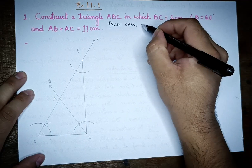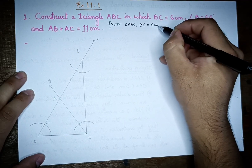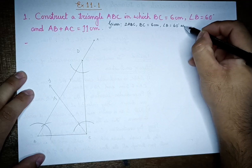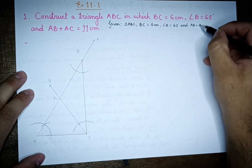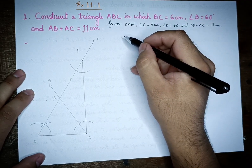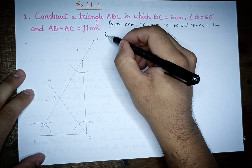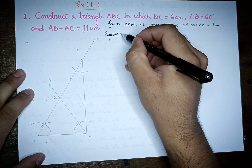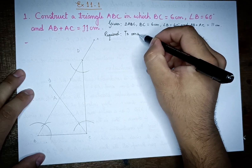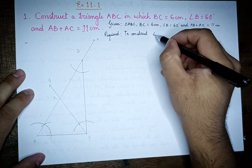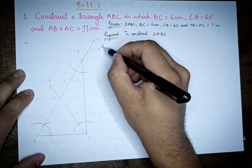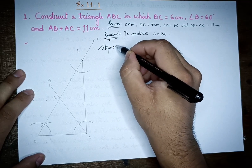If you look at the given proof, the required triangle ABC: BC is equal to 6 cm, angle B is equal to 60 degrees, and AB plus AC is equal to 11 cm. Steps of construction.